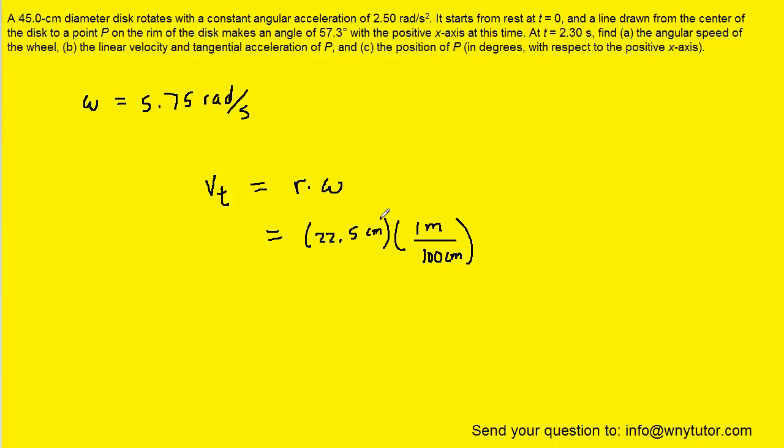So that would put the radius into its standard unit, and then we'll multiply it by the angular velocity that we determined in part A, which was 5.75 radians per second. And that turns out to be approximately 1.29 meters per second. So this would be the linear velocity and the correct answer to part B.